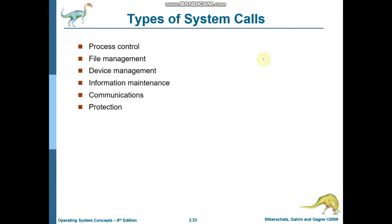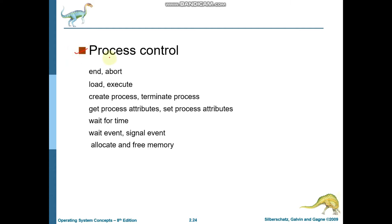Assalamualaikum viewers, welcome to our YouTube channel. Today in this video lecture we are going to discuss types of system calls and system programs. There are total six types of system calls: process control, file management, device management, information maintenance, communication, and protection. We will discuss each type in detail.